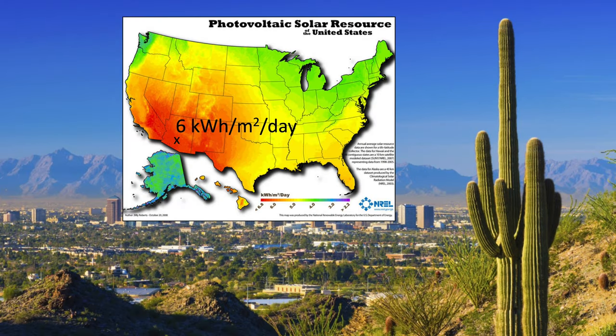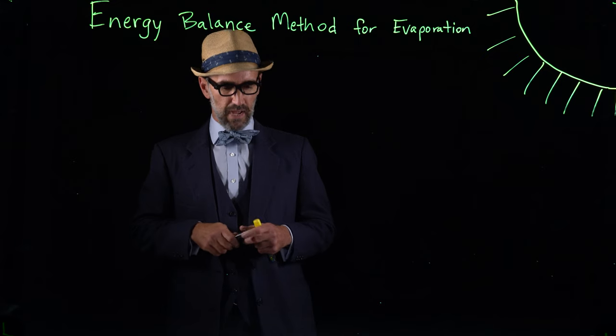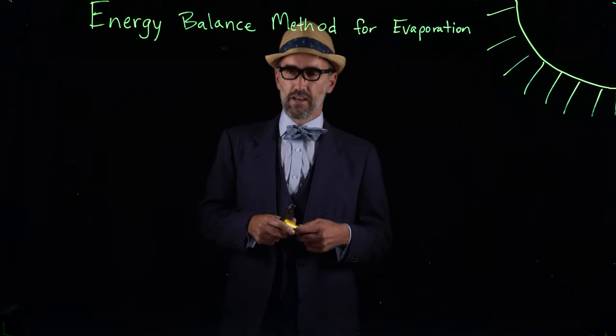We also know that there is significant solar radiation in the area. And we can use this solar radiation map to calculate the watts per meter squared. So the first calculation that we're going to do is just a unit conversion of taking this photovoltaic solar resource map and calculating the net radiation.